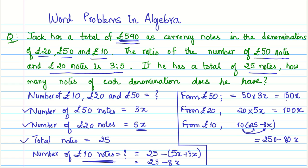So now what we have is 150x, 100x and 250 minus 80x. These three are the amount of money contributed by £50, £20 and £10 notes. We are given that all this totaled up, that is 150x, 100x and 250 minus 80x, when we total these three amounts, we get £590.